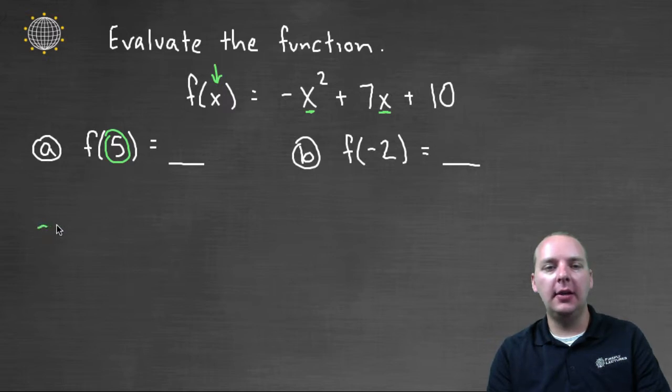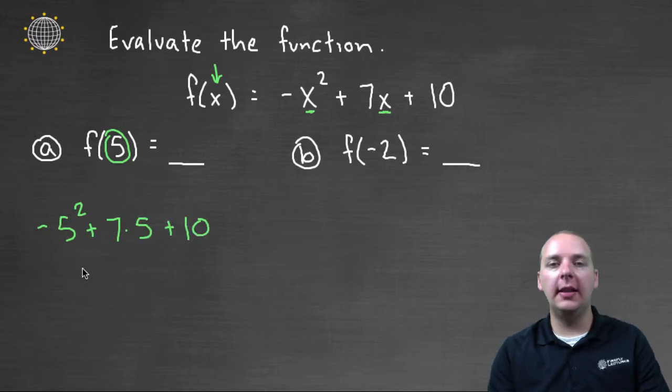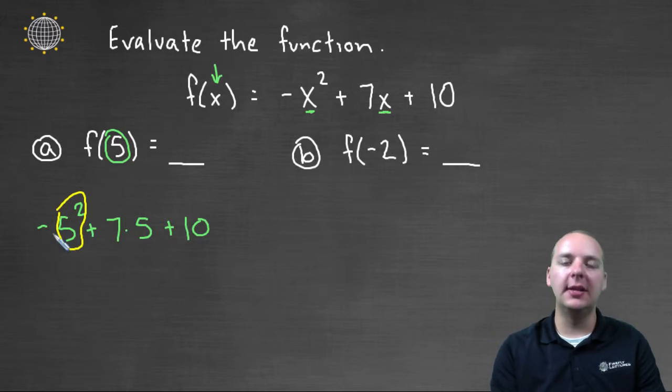So we'll take negative five squared plus seven times five plus ten. Now this is one example right off the bat that a lot of students make a mistake about. They would look at this, especially the first term, and they'd say negative five squared is twenty-five. Negative five times negative five. That's incorrect actually, because remember your order of operations, exponents come before multiplication with this negative one coefficient out front.